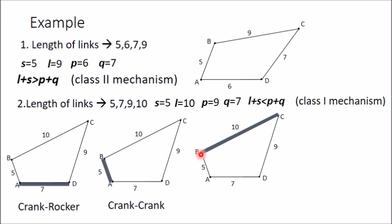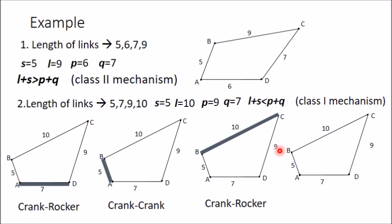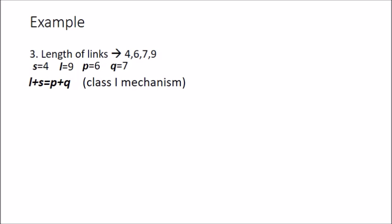In the third inversion, fixing BC: one end (B) of the smallest link AB is fixed, so again you get a crank-rocker mechanism. Here AD is the coupler, AB acts as the crank, and DC acts as the rocker. In the fourth inversion, fixing DC: neither end of the smallest link AB is fixed, so you get a rocker-rocker (double rocker) mechanism. AB becomes the coupler, and BC and AD can only oscillate as rockers.